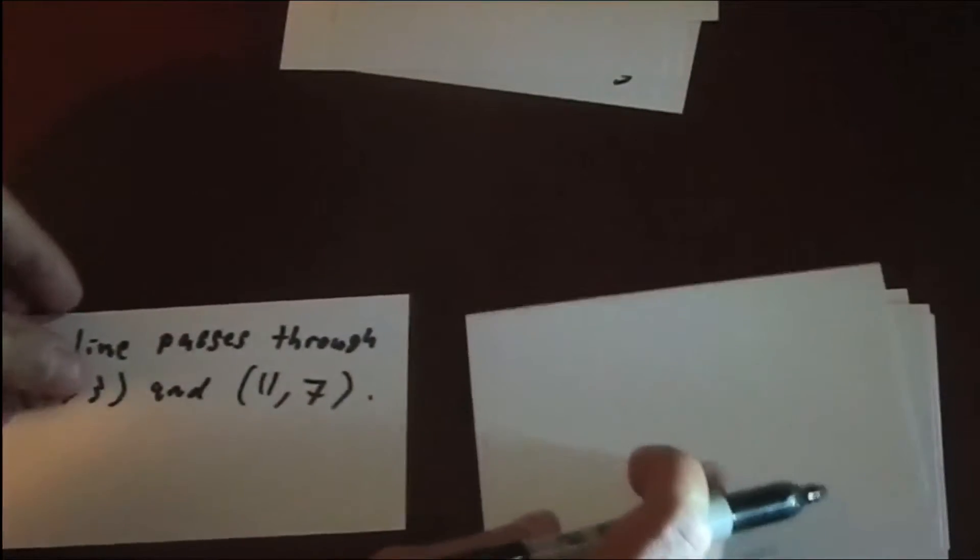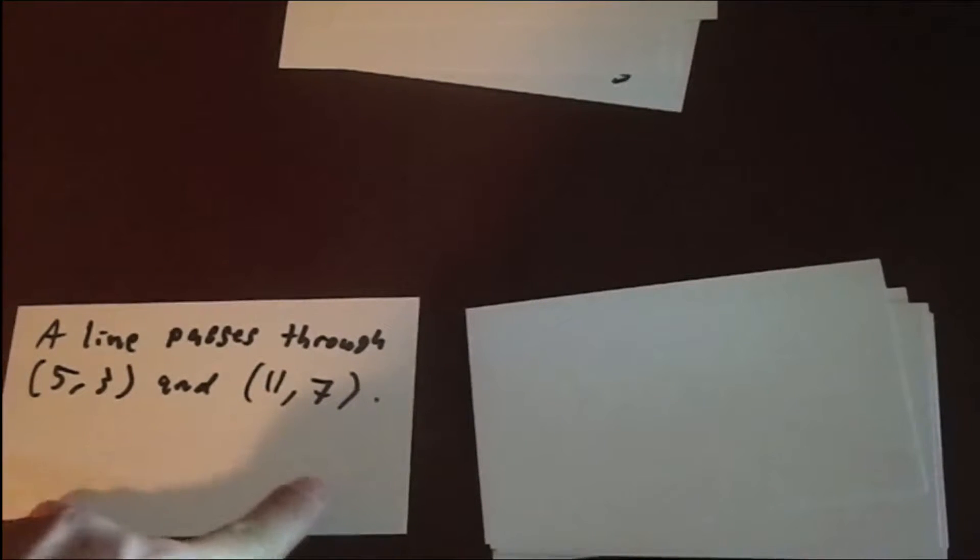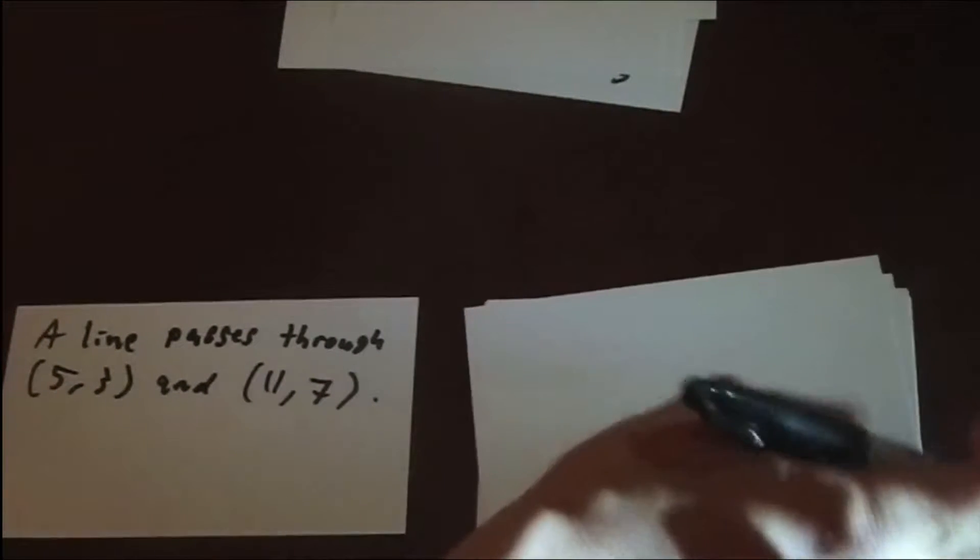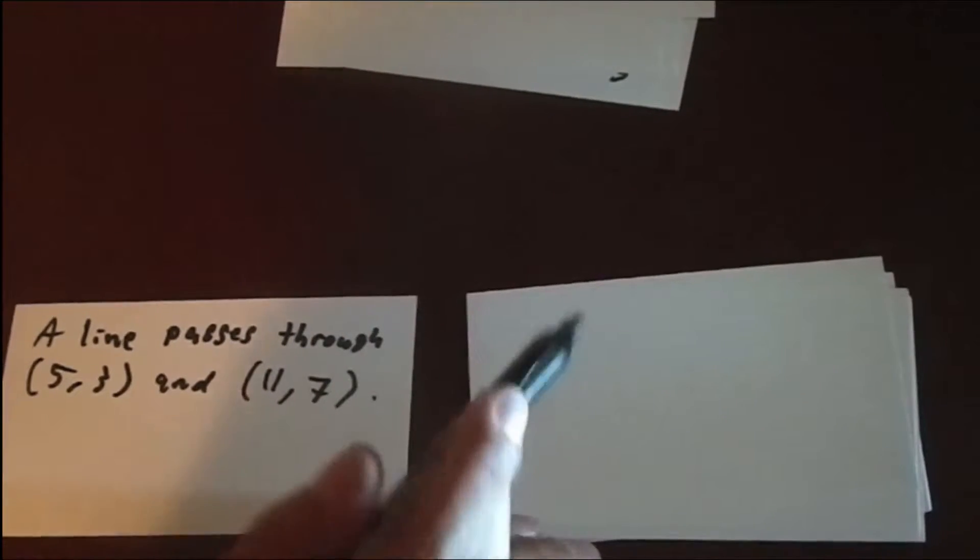Now, since you get two points and nothing else, you might want to use point-slope form. We're just going to find the slope first because that's always the first step.